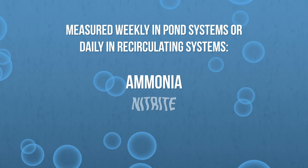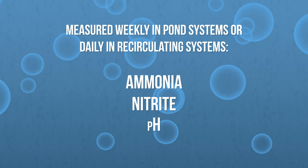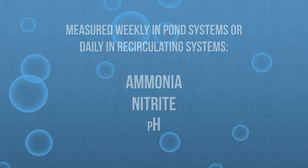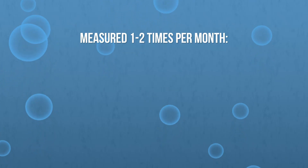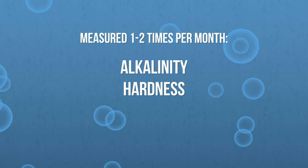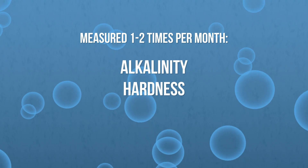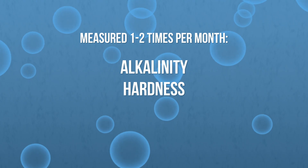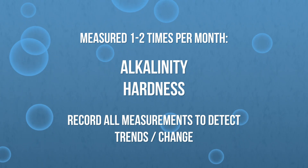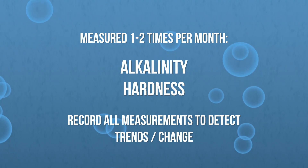Ammonia, nitrite, and pH can be measured weekly in pond systems or daily in recirculating aquaculture systems. Alkalinity and hardness can be measured less frequently, perhaps one or two times per month, as they do not fluctuate as rapidly. These measurements should also be recorded so that changes in trends can be easily detectable.